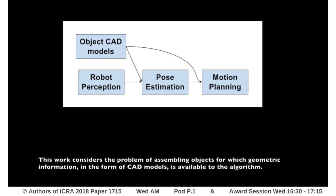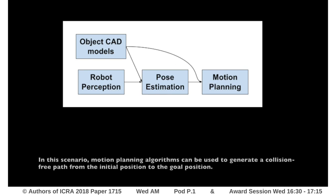This work considers the problem of assembling objects for which geometric information, in the form of CAD models, is available to the algorithm. In this scenario, motion planning algorithms can be used to generate a collision-free path from the initial position to the goal position.